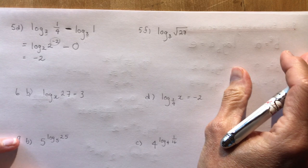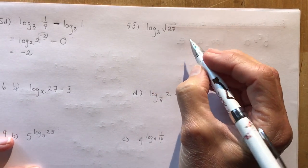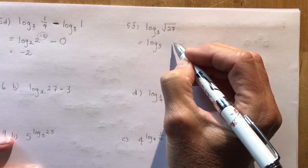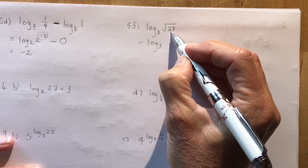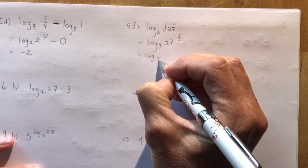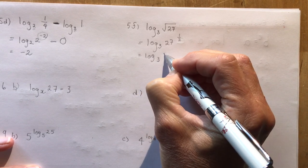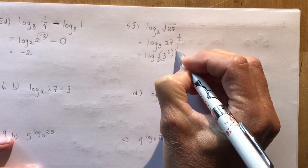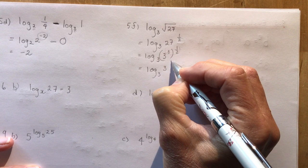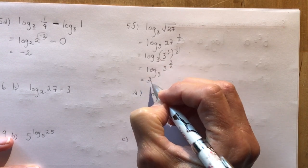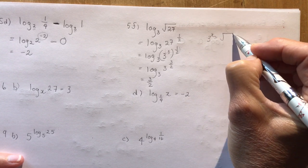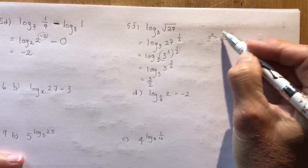Log base 3 of the square root of 27: the square root is the 1/2 power, so this is 27 to the 1/2. But 27 equals 3 cubed, so I have 3 cubed to the 1/2 power. Multiplying exponents (power to a power), that's 3 to the 3/2. So log base 3 of 3 to the 3/2 — my answer is 3/2. You could also set this equal to x and write 3 to the x equals the square root of 27, but you'd still need to rewrite with base 3.